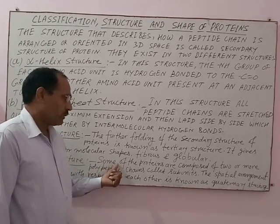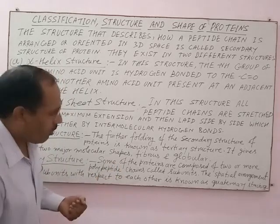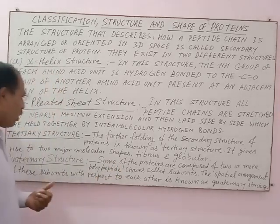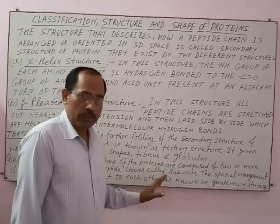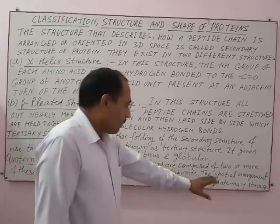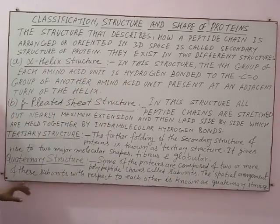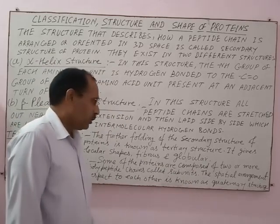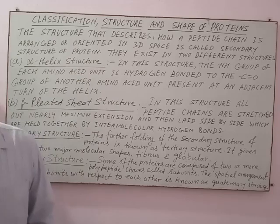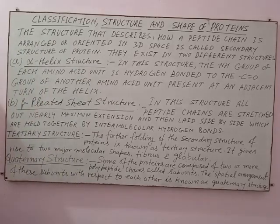Some proteins are composed of two or more polypeptide chains, called subunits. The spatial arrangement of these subunits with respect to each other is known as the quaternary structure of protein. The primary, secondary, tertiary, and quaternary structures of protein can be represented as follows.